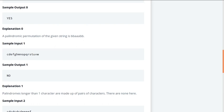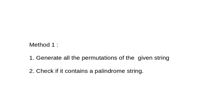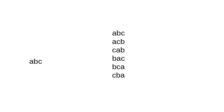Let us try to see how we can think of solving this particular problem. One way to solve this is: given a string, you generate all the permutations, and after generating all the permutations, you verify if we have any palindromes among them. For example, if I consider a string like ABC, the various permutations will be ABC, ACB, CAB, BAC, BCA, and CBA. Now look out for any palindrome string in this. Did you find any palindrome? No! So it means ABC can never be arranged in a way which can form a palindrome.